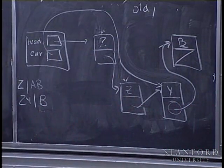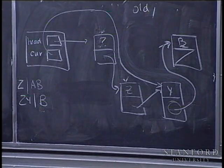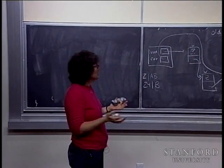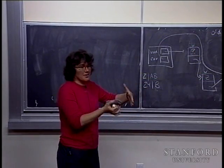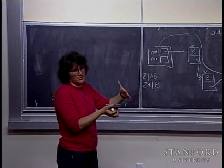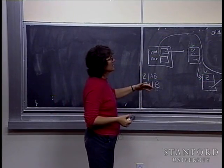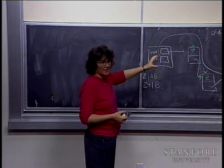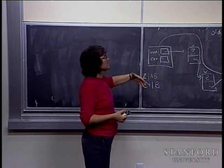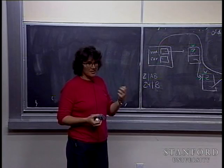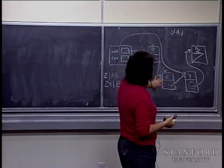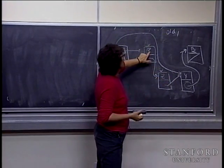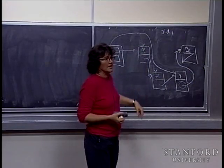Question: what does the dummy cell look like? It looks just like any other cell — it's a new cell T. You just don't assign the character field because it has nothing in it. It's just another node in the chain, but one you put there purposefully as a placeholder with no character data. So if you were ready to print the contents of the buffer, you have to remember the dummy cell is there and skip over it, starting at head's next as the first interesting cell.